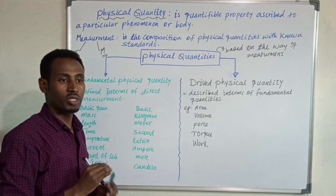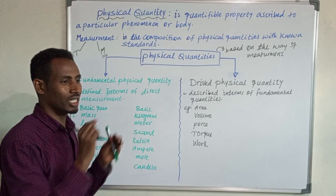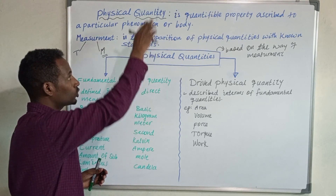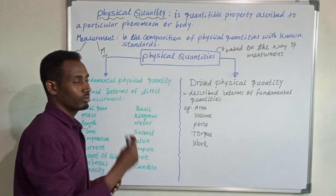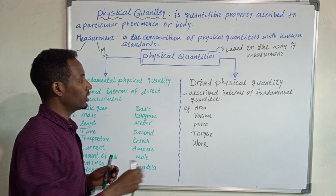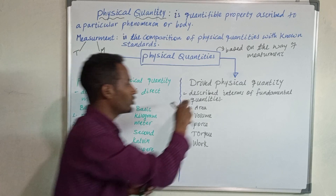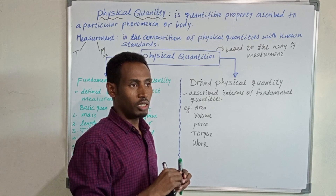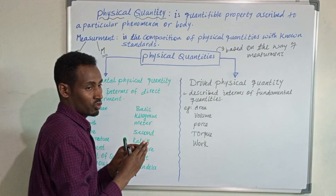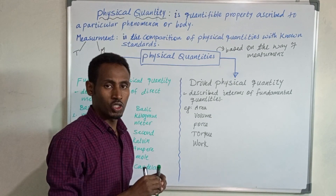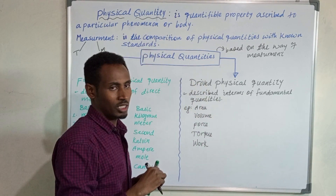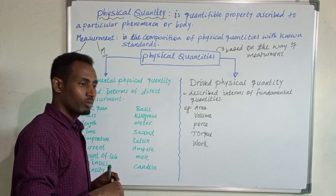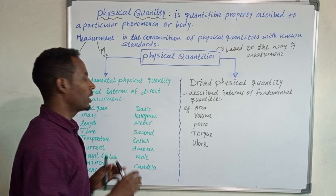Fundamental quantities are quantities which are measured directly without needing a mathematical equation. We can find the quantitative information directly by using different techniques and different measuring devices. Fundamental quantities are quantities which are measured directly, and there are seven in number.